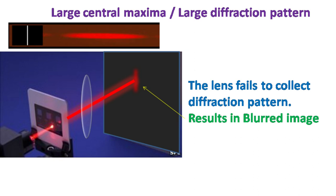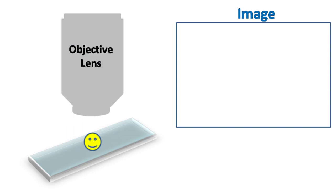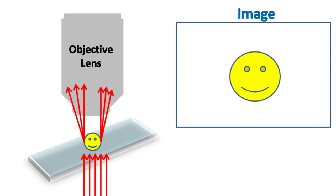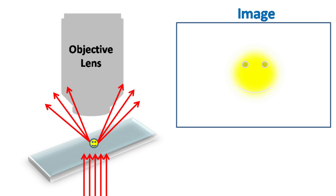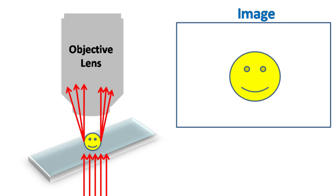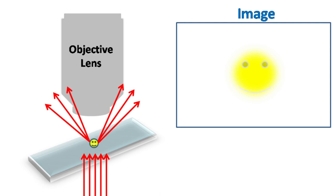A similar phenomenon happens when we try to see small objects with a microscope. As the object size gets smaller and smaller, the diffraction increases. This is because all the information regarding the tiny object that you see through a microscope lies in its diffraction pattern. As the object gets smaller, the diffraction pattern increases and the objective fails to collect the diffraction pattern.